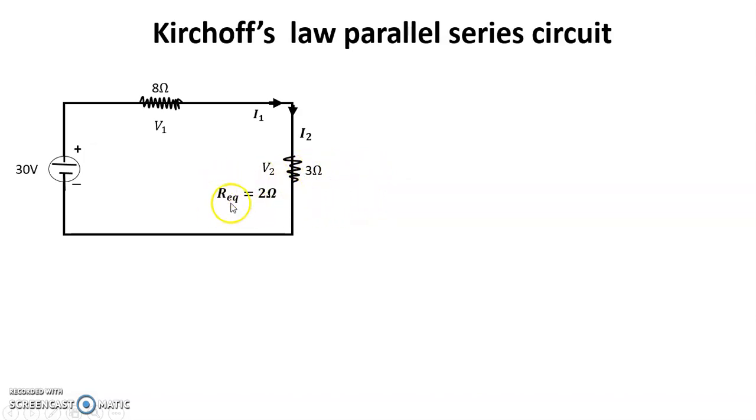So friends, equivalent resistance is 2 ohm. How I get it, I will discuss. The equivalent resistance formula is Req = 1/(1/R1 + 1/R2). So 1/(1/3 + 1/6), because we know 6 ohm is V3, 3 ohm is V2. So 1/3 plus 1/6 equals 2 ohm.